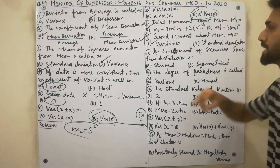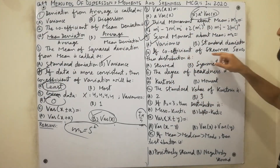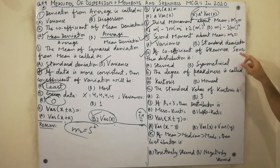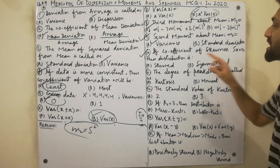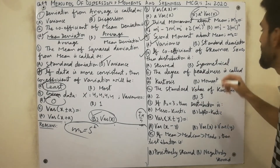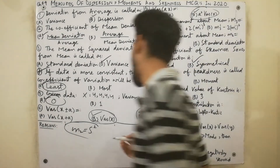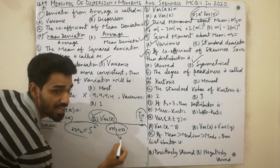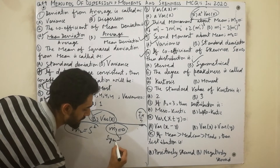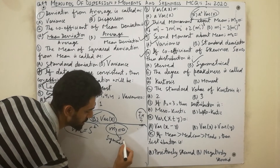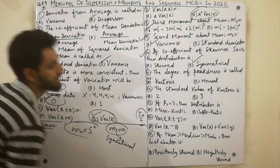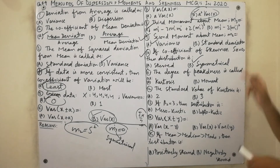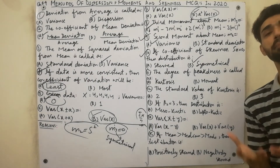MCQ ten: if the coefficient of skewness is equal to zero, then the distribution is symmetrical. Similarly, if m3 equals zero, the distribution will also be symmetrical. Must remember — if coefficient of skewness equals zero, distribution is symmetrical.